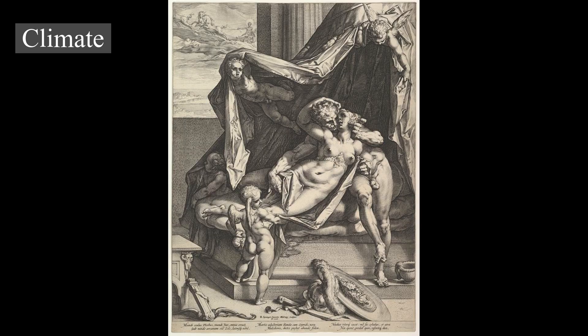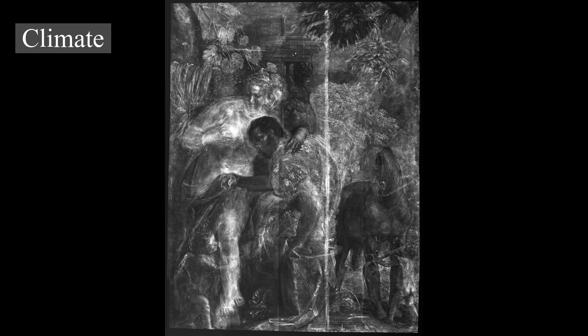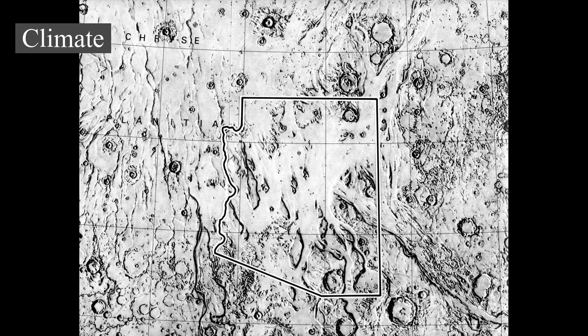Of all the planets in the solar system, the seasons of Mars are the most Earth-like, due to the similar tilts of the two planets' rotational axes. The lengths of the Martian seasons are about twice those of Earth's because Mars's greater distance from the Sun leads to the Martian year being about two Earth years long. Martian surface temperatures vary from lows of about -110°C to highs of up to 35°C in equatorial summer. The wide range in temperatures is due to the thin atmosphere, which cannot store much solar heat.